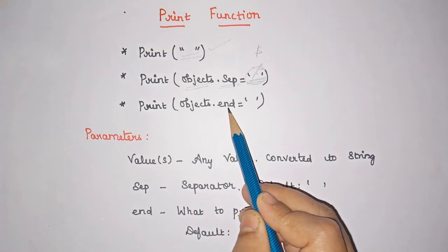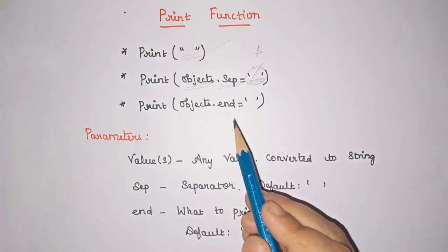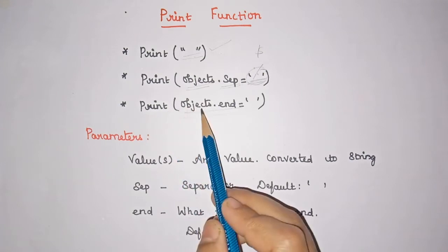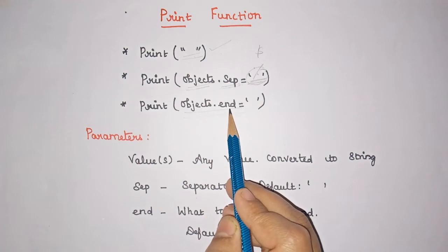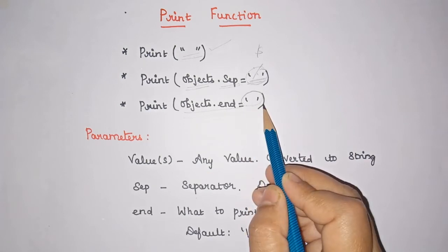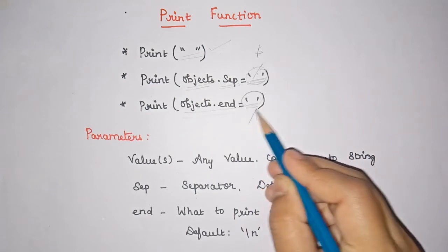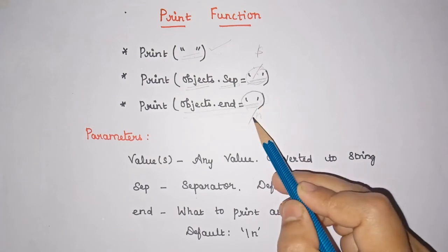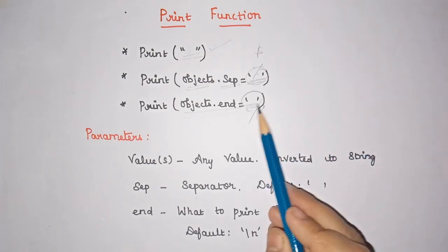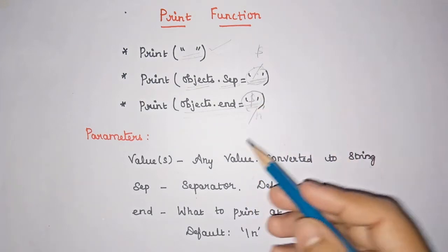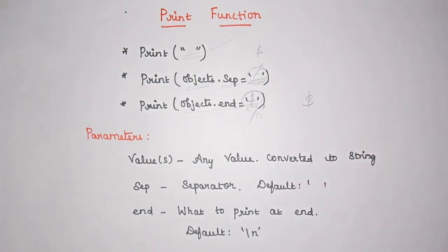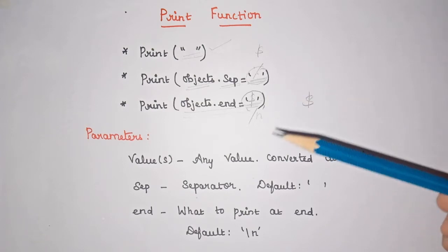The next print statement option is object dot end. If you want to display something at the end of your output, you can use this. It is also optional. If you don't give anything here, by default it will take \n, which is the newline character. If you give, for example, a dollar symbol, then after executing the print statement, that dollar symbol gets displayed at the end of the output.